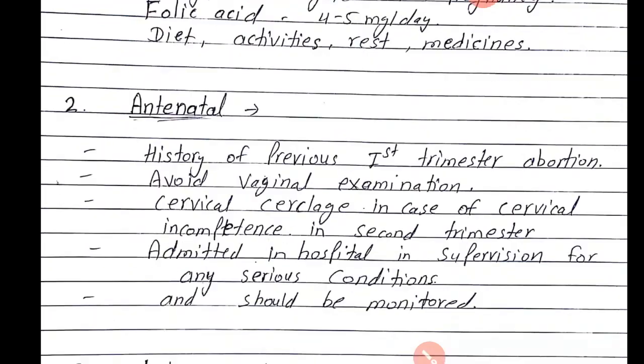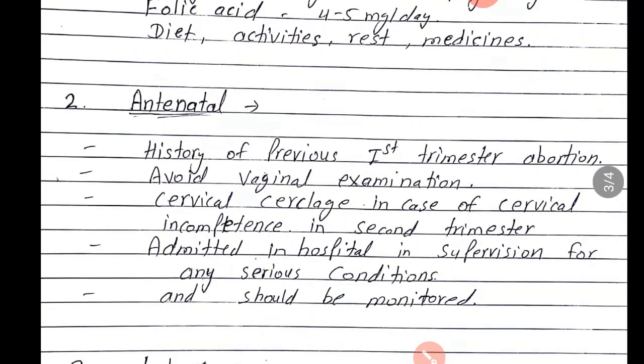Ab dekhte hain antenatal management. Antenatal pregnancy ke doran: history of previous first trimester abortion — agar uski previous pregnancy mein first trimester mein koi abortion ki history hai to aise patient mein vaginal examination ko avoid karenge, kyunki vaginal examination se cervix stimulate hota hai jisse uterine contraction hone ki chances hote hain, jisse vapas abortion ki condition ho sakti hai.